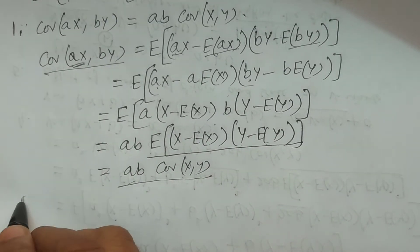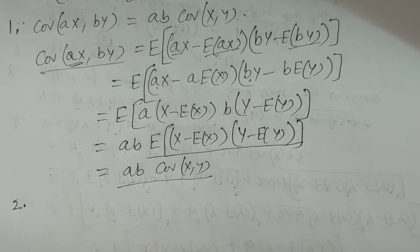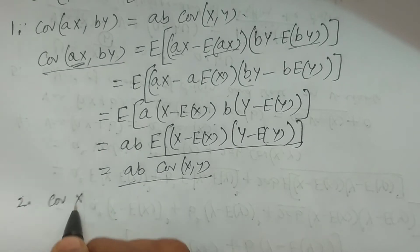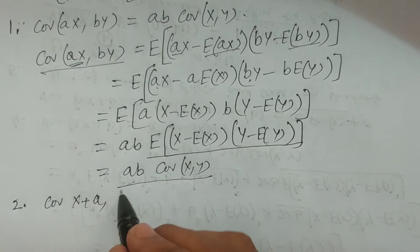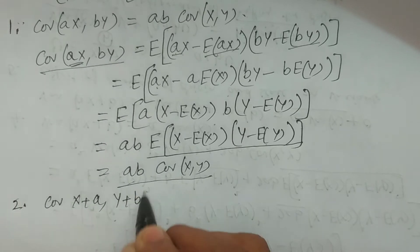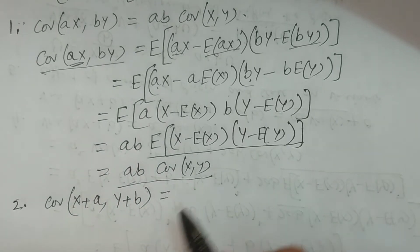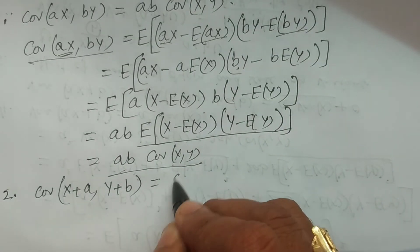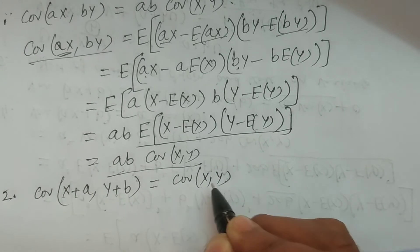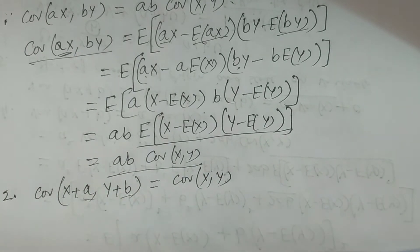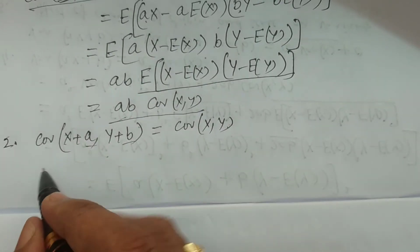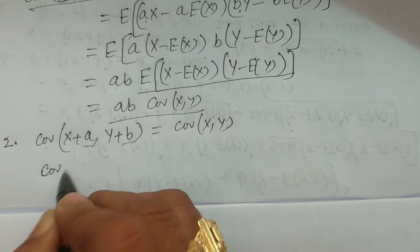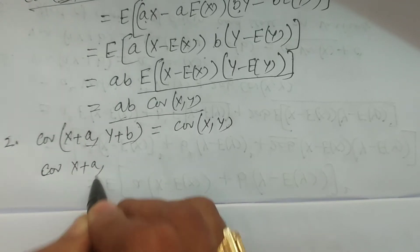Now, property number two. Covariance of (x plus a) and (y plus b) — if you add some constant to the variables x and y, what is the result? It is simply covariance of x, y; these constants are not affected. Let's prove it.